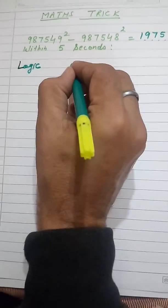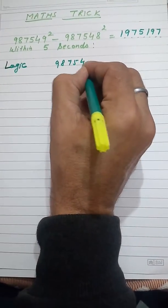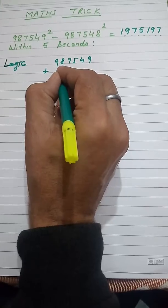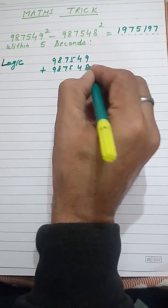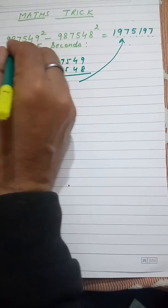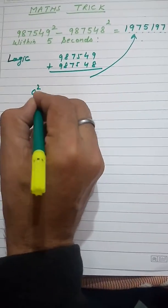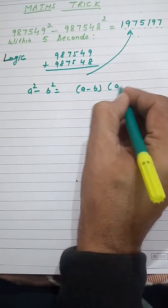Just you have to add these two values: 987549 plus 987548, and this is the answer. Logic is that a squared minus b squared equals a minus b times a plus b.